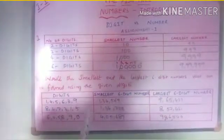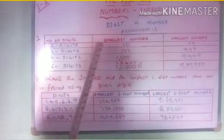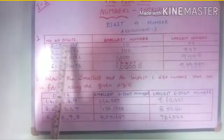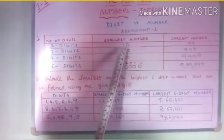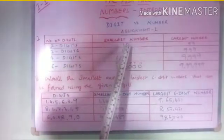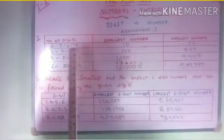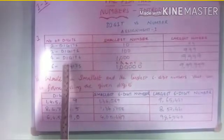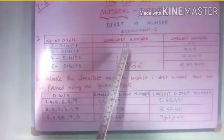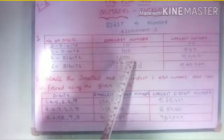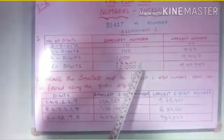The first question: we need to find the smallest number using 2 digits — that is 1 and 0 — which is 10. The smallest 3-digit, 4-digit, and 6-digit numbers will be 100, 1000, and 1 lakh.